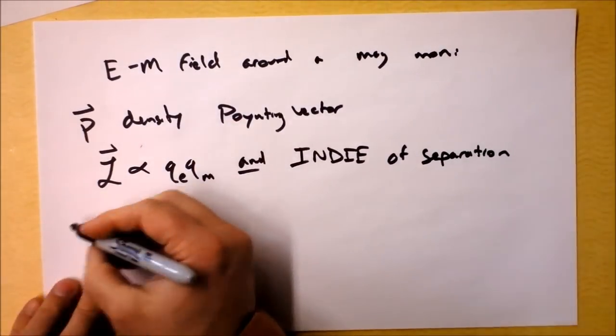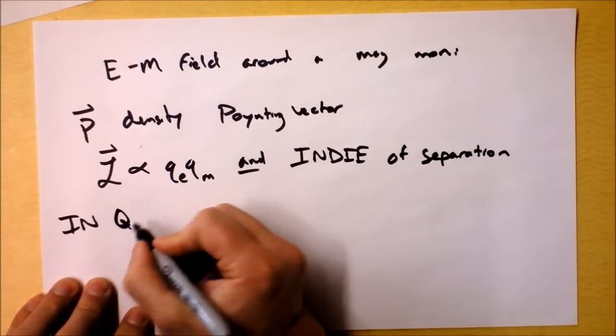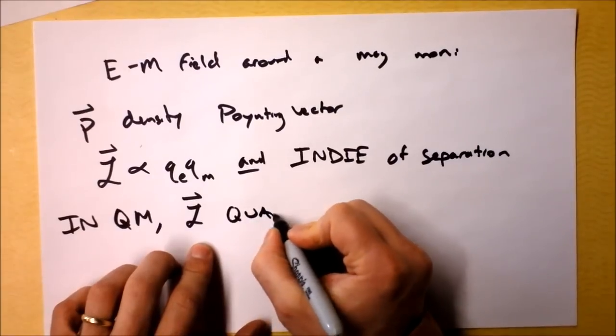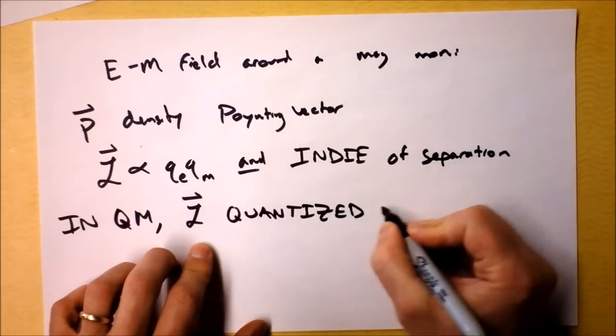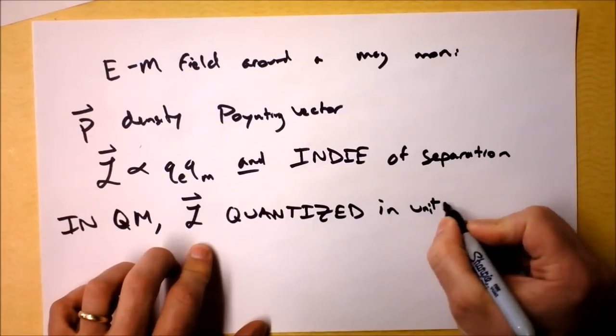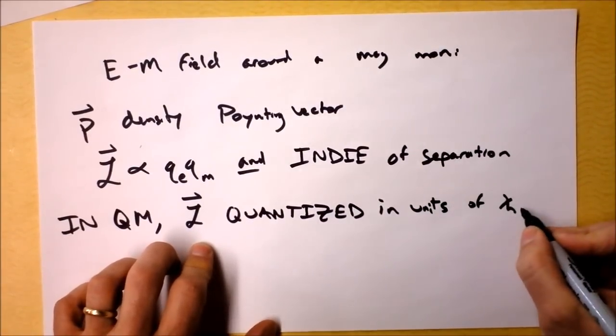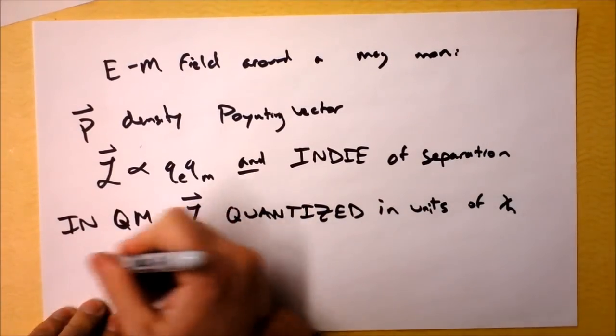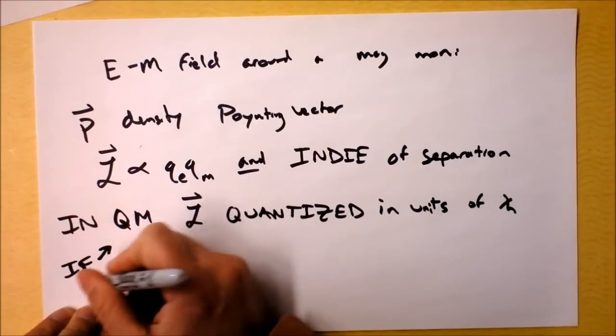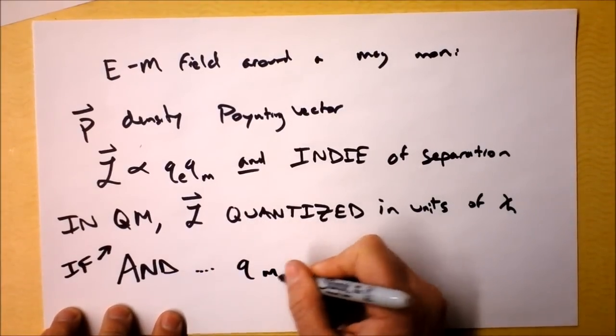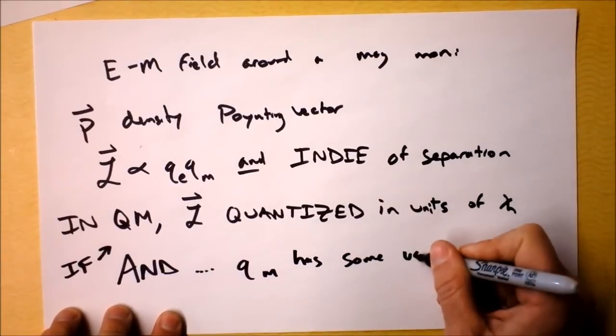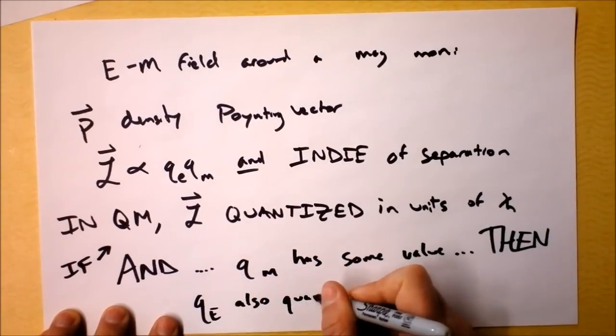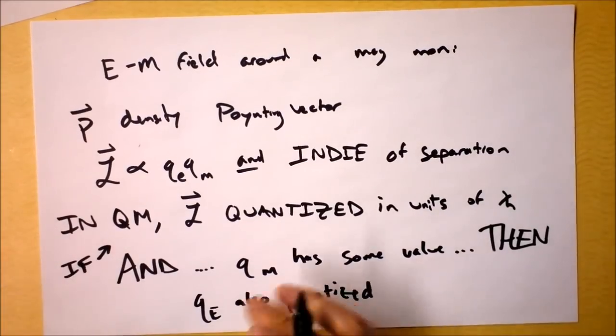And then in quantum, in quantum, angular momentum is, of course, quantized. It's quantized in, wow, quantized in units of h-bar. So that means if angular momentum is quantized and if that and QM has some value, then we've got QE also quantized. It's really that easy, because we know that angular momentum must be quantized.